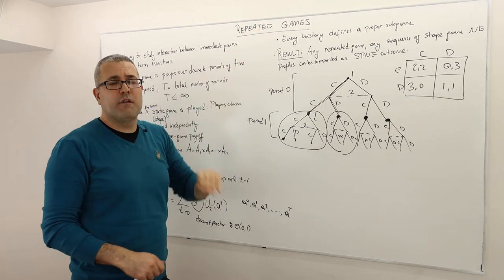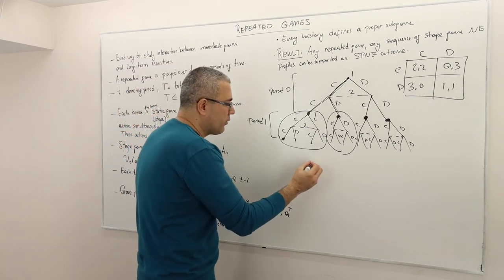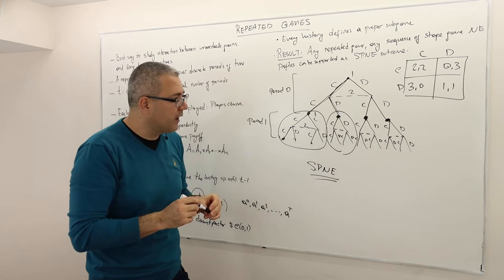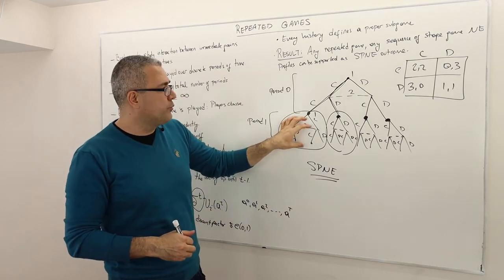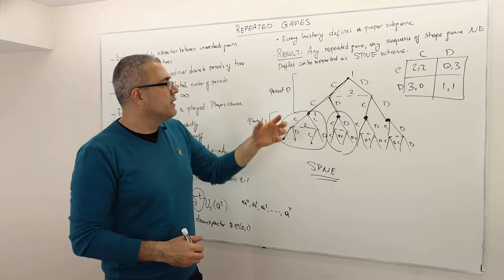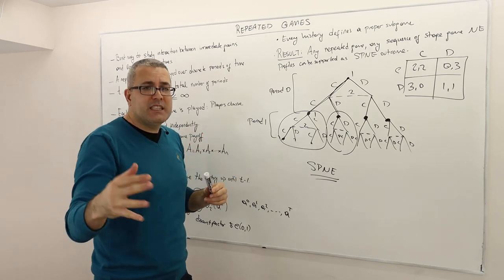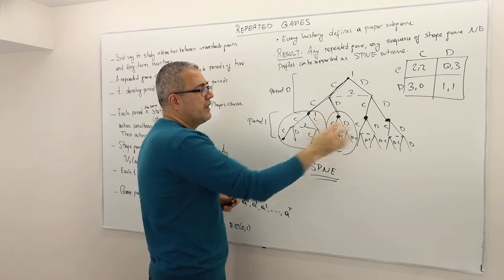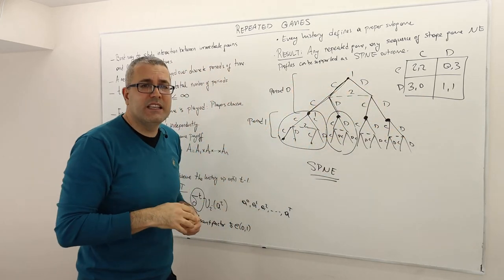Every history defines a proper subgame — that's a very important property in repeated games. So if we are looking for a subgame perfect Nash equilibrium strategy profile, it should describe Nash equilibrium strategies at each subgame. Whatever strategy profile you give me, if it is SPNE, it has to be Nash at each of these subgames and Nash in the entire game.